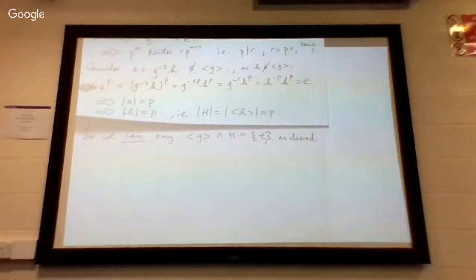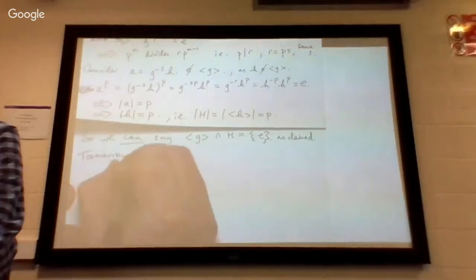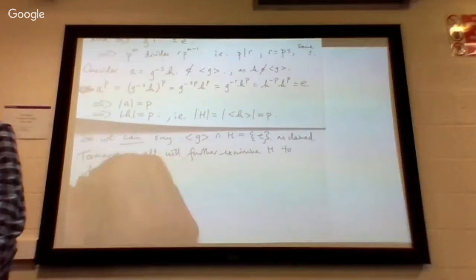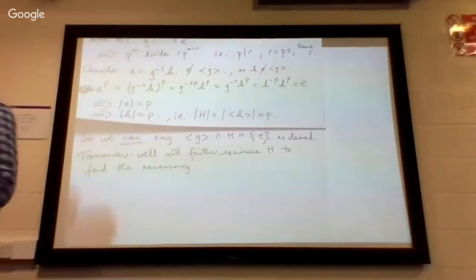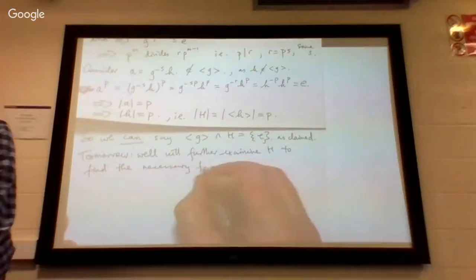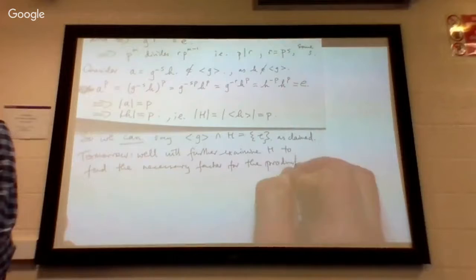Having trivial intersection is important when you want to set up internal direct products — it's one of the conditions. We still haven't used our induction hypothesis, so that's something floating around that we haven't used yet. We can't squeeze it in — we'll have to continue this tomorrow. There's about another page. So tomorrow we will further examine h to find the necessary factor for the product that shows G is isomorphic to ⟨g⟩ times something.